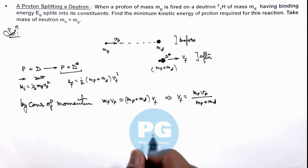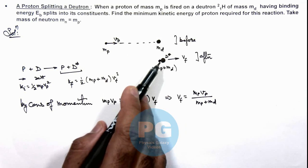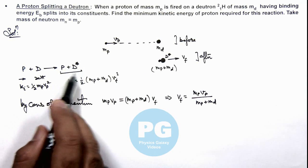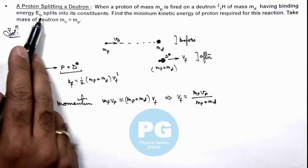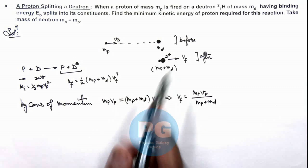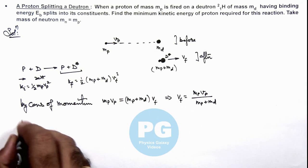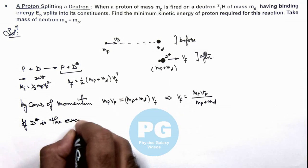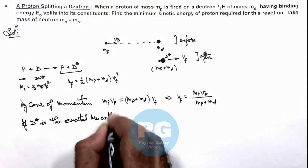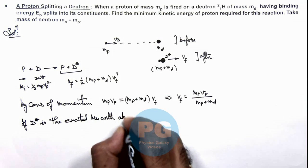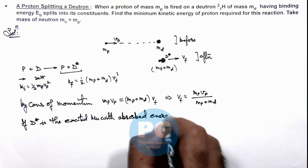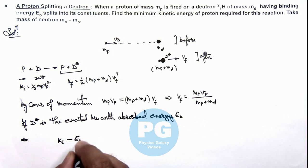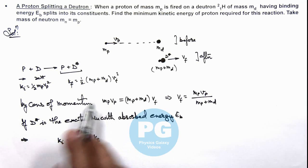In this situation, the maximum loss in kinetic energy takes place. If this energy is absorbed by the deuteron, where d-star is the excited deuteron nucleus, and if the absorbed energy is Eb, then this d-star will split into its constituents. So we can write: initial kinetic energy minus Eb equals the final kinetic energy of the particles in the collision.